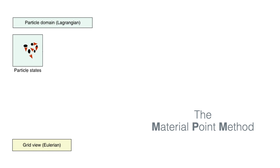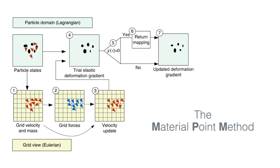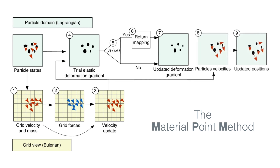In MPM, particles store position, velocity, and the deformation gradients. First, mass and velocity are transferred to the grid, which allows us to compute grid forces and then explicitly update grid velocities. Then, the trial elastic deformation gradient is computed, and if this trial stress state violates the yield condition, the deformation gradient will be updated using a return mapping algorithm. Then finally, we update particle velocities and advect positions.